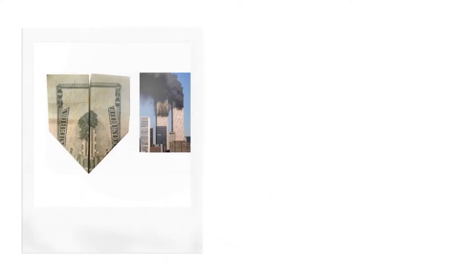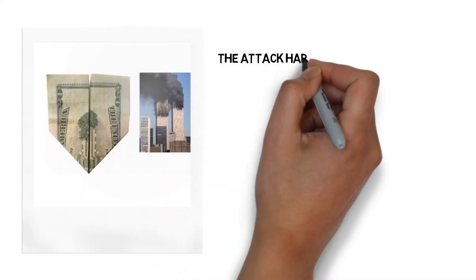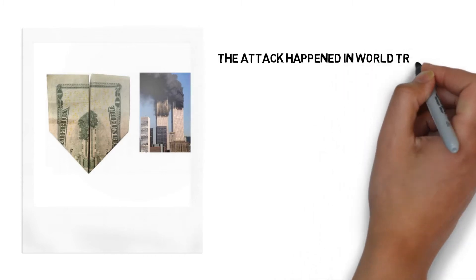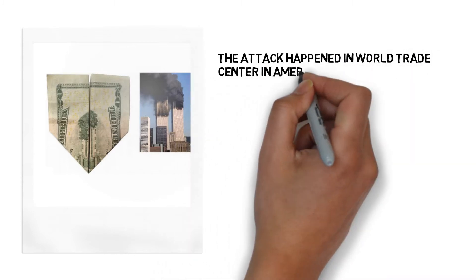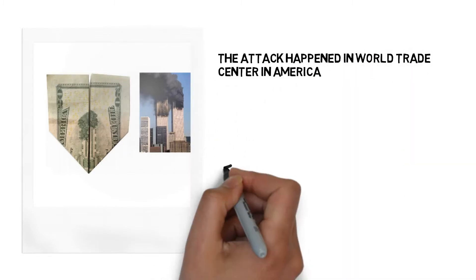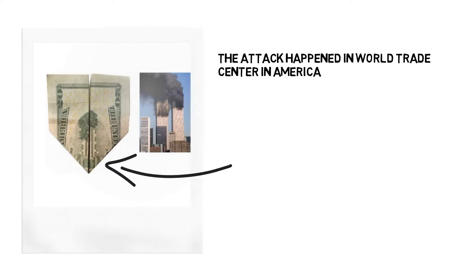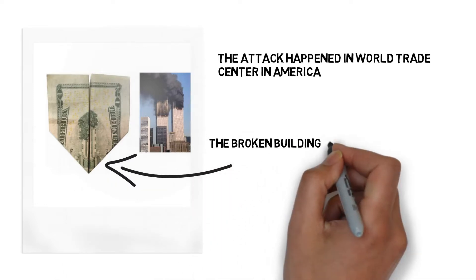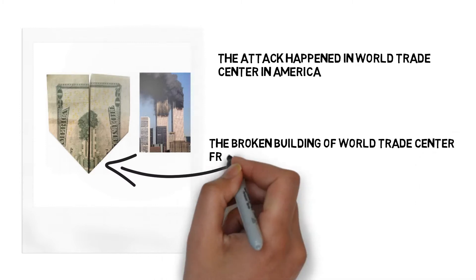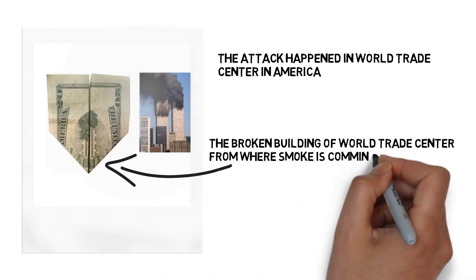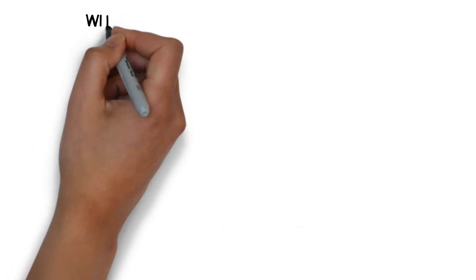Even it is also believed that the attack that happened in World Trade Center in America was already known by Illuminati. That's why it was printed in dollar notes. If we fold the one dollar note in a triangular way, then we can see the broken building of World Trade Center from where smoke is coming out.